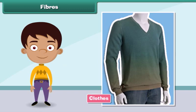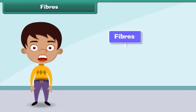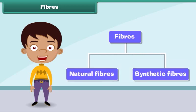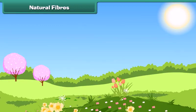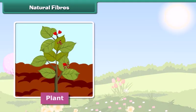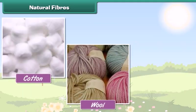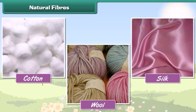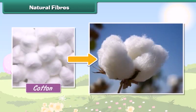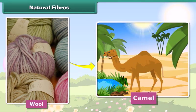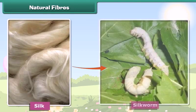Fibers are of two types: natural fibers and synthetic fibers. Natural fibers are made from plants and animals. Some examples are cotton, wool, and silk. Cotton is obtained from plants, wool is obtained from sheep, goats, and camels, and silk is obtained from silkworms.